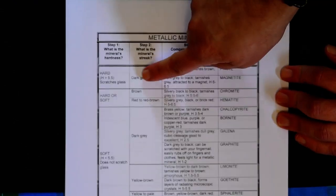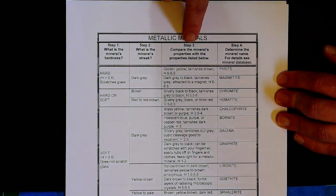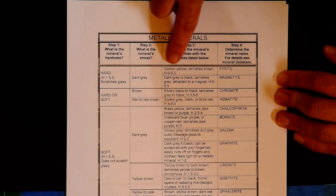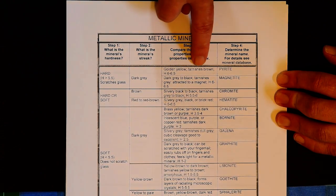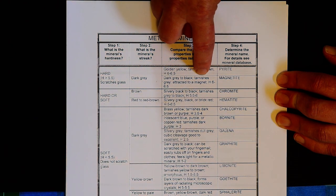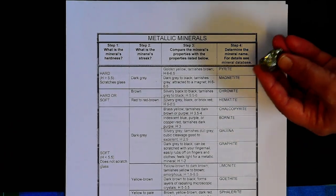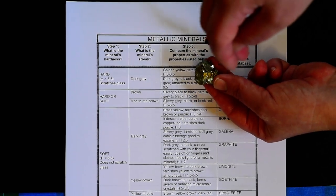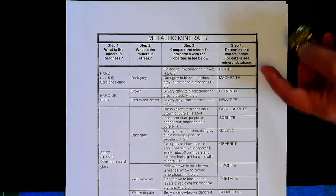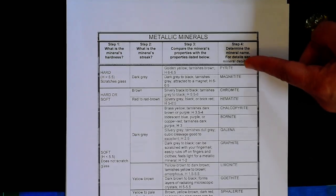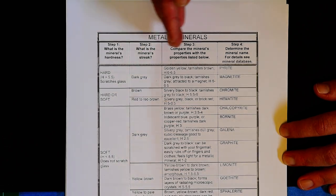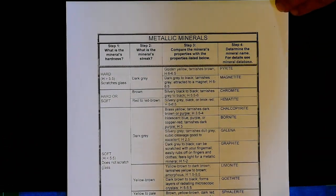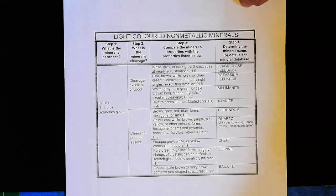The dark gray streak narrows it down to two minerals. One is golden yellow and tarnishes brown; the other is dark gray to black, tarnishes gray, and is attracted to a magnet. This mineral looks golden yellow and is not attracted to a magnet, so following the flow chart identifies it as pyrite.